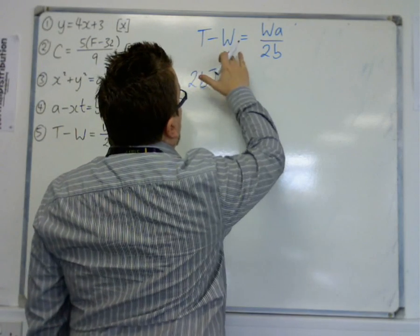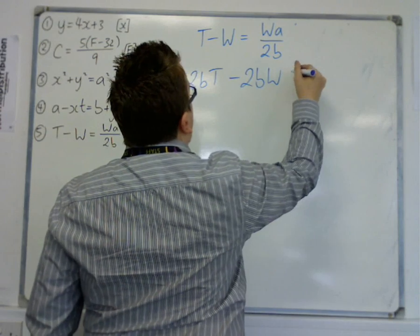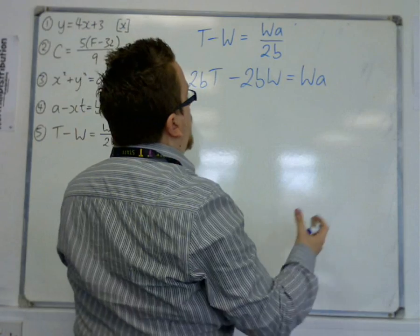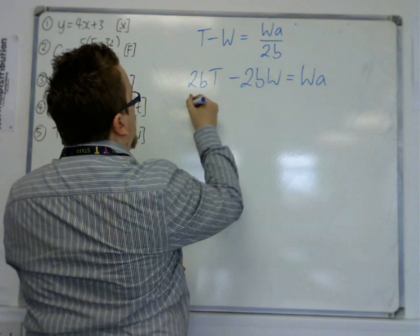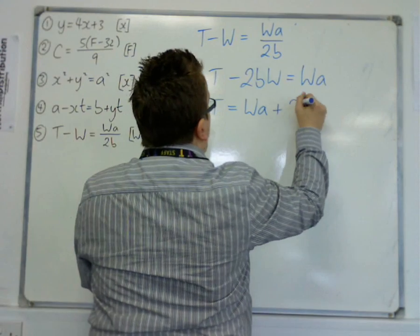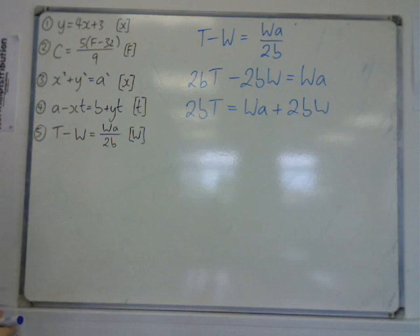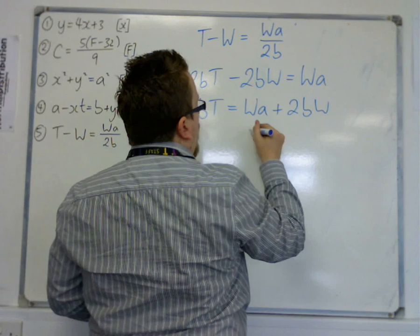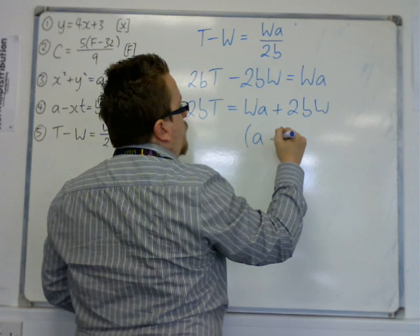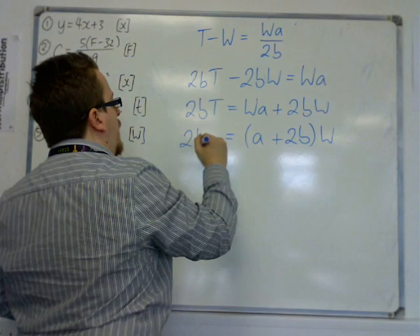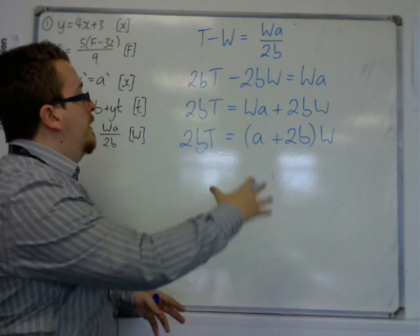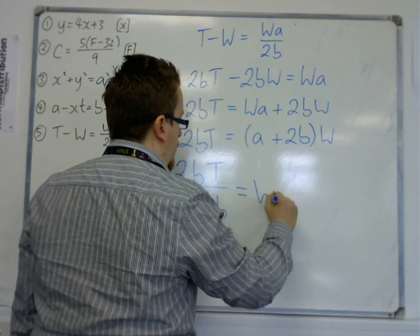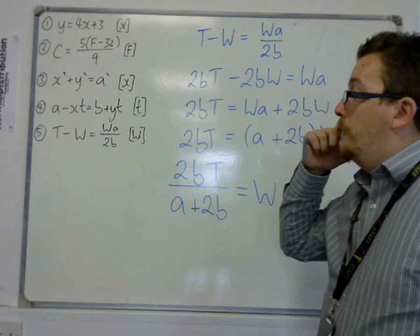So, we've multiplied the 2b by the t. We're also going to multiply the 2b by the w. So, we get 2bw is equal to, well, we just have wa on the right-hand side now. So, now if I add 2bw to both sides, what I'm doing is I'm moving all the w's onto the right-hand side of the equation. So, we get 2bt is equal to wa plus 2bw. Then, I can notice that on the right-hand side, these two terms have a factor of w. So, I can write that, factorise, and write that as a plus 2b lots of w. And I can use the same trick that I did in this previous question, where I divide through by the factor. And that's where we would finish.